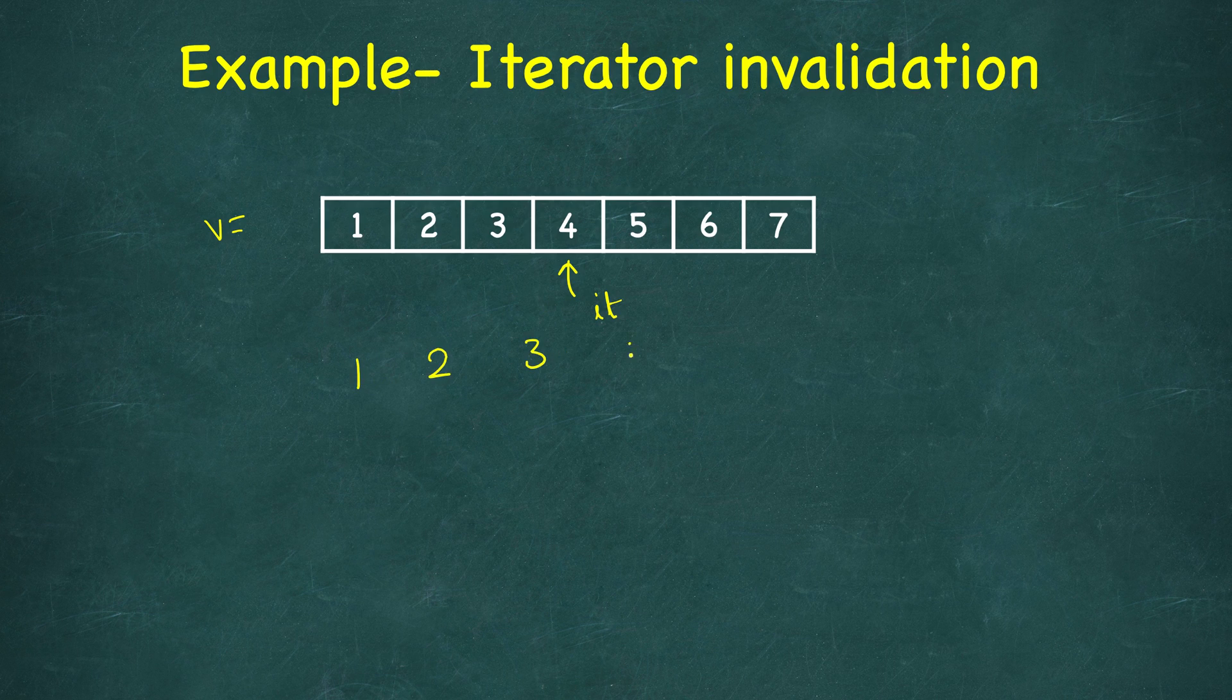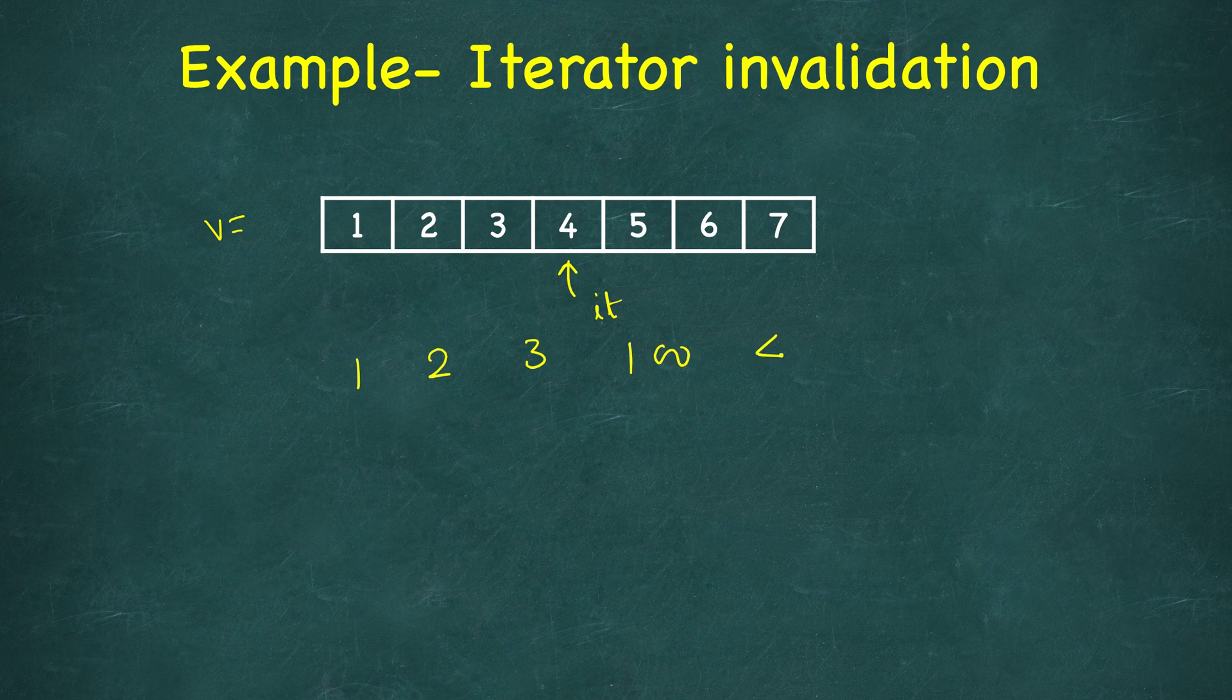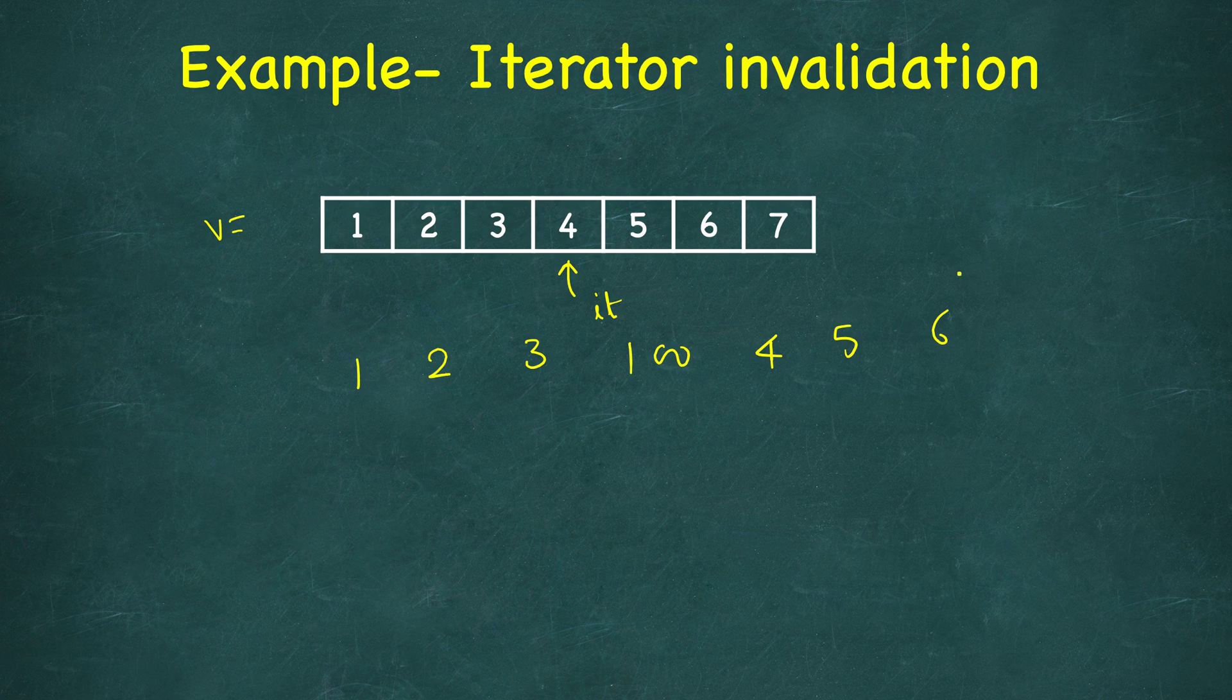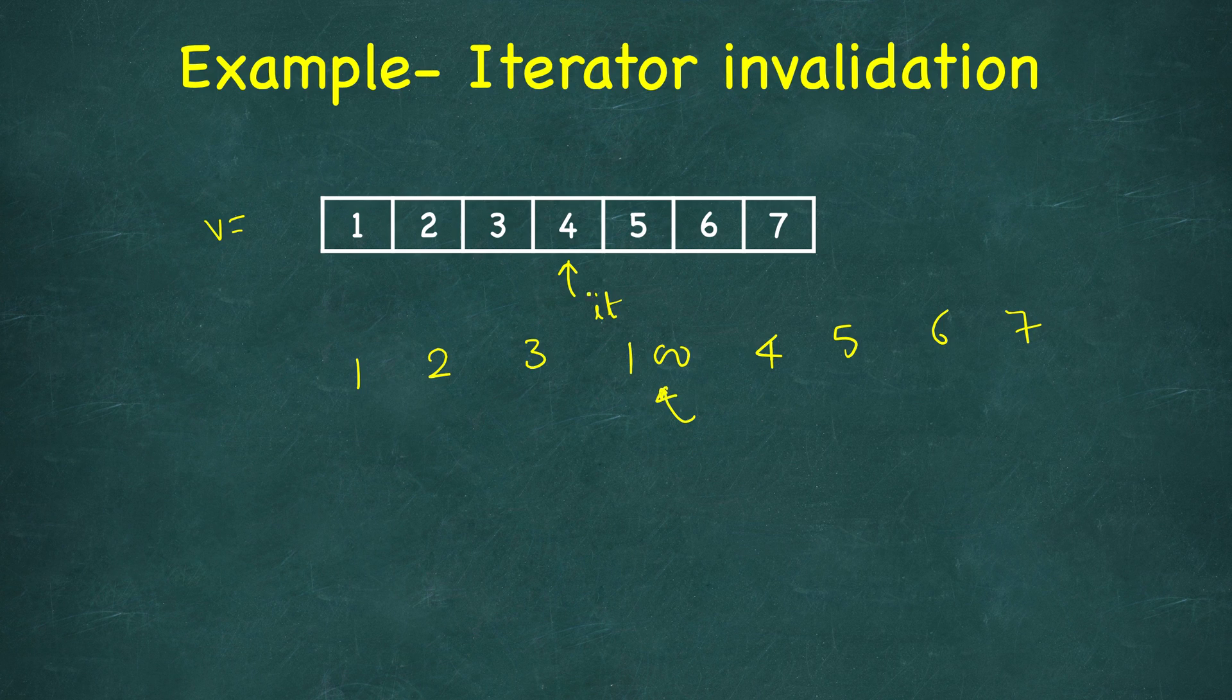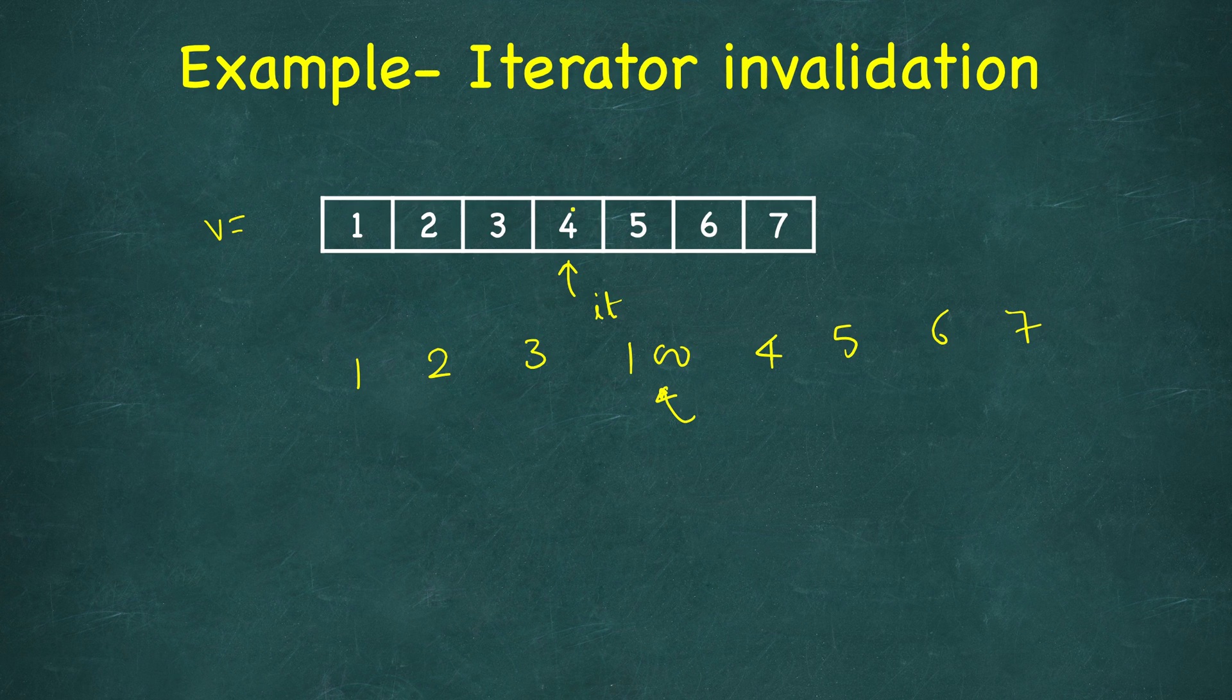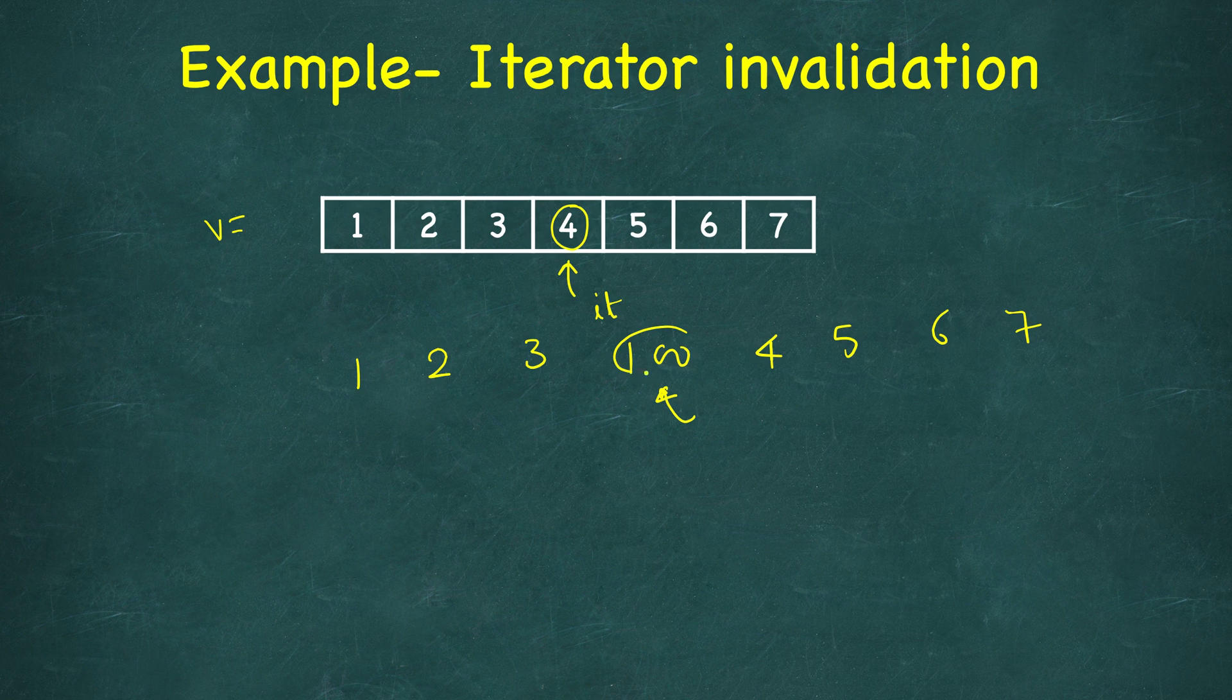So now it becomes 1, 2, 3, then 100, 4, 5, 6, and 7. But it may still be pointing to this location. So earlier before the update it was pointing to a location which contained 4, now it's pointing to a location which contained 100.